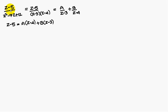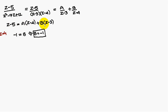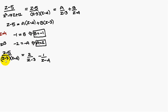Taking LCM and simplifying: Z minus 5 equals A·(Z minus 4) plus B·(Z minus 3). Setting Z equal to 4: 4 minus 5 equals minus 1, and 4 minus 3 equals 1, so B equals minus 1. Setting Z equal to 3: 3 minus 5 equals minus 2, and 3 minus 4 equals minus 1, so minus 2 equals minus A, therefore A equals 2. So (Z minus 5)/[(Z minus 3)(Z minus 4)] equals 2/(Z minus 3) minus 1/(Z minus 4).